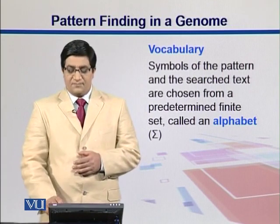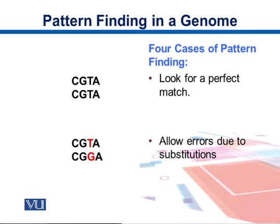There are four different ways in which we can find patterns. First, we can look for a perfect match — exact matching — where we look for the pattern to be exactly the same. Second, we can allow errors due to substitutions. A substitution is a mismatch — for example, at position three, the top strand has T whereas the bottom strand has G, indicating a mutation where a nucleotide has been substituted.